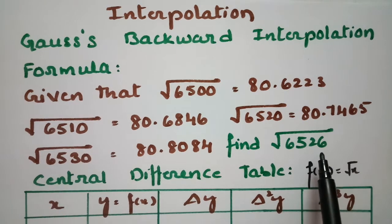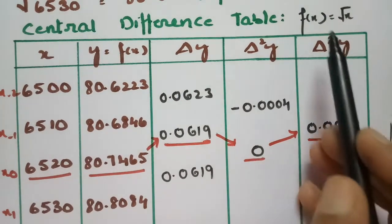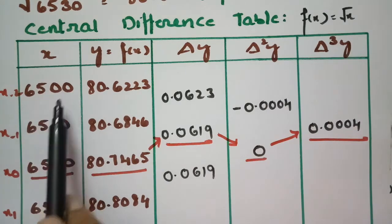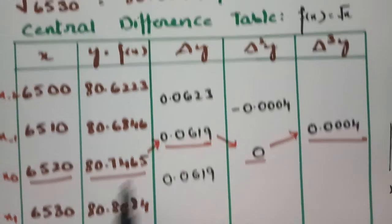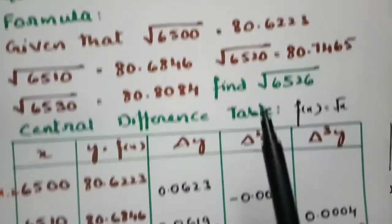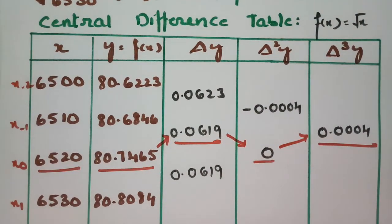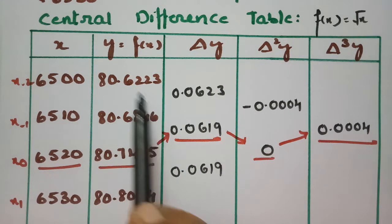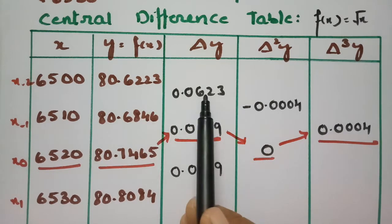To solve this problem, we have to create a central difference table. We take f(x) = √x, and the x values are 6500, 6510, 6520, and 6530. From the given data I have written all the y = f(x) values. The first difference calculated using a calculator is 80.6846 minus 80.6223, and likewise I have completed the full difference table.